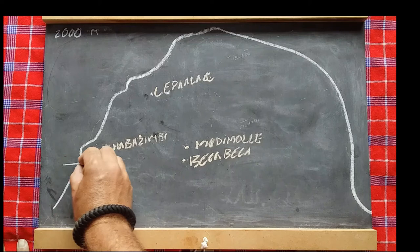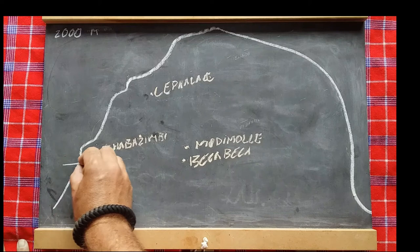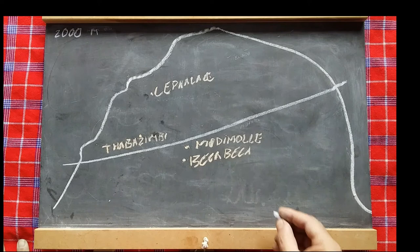Just north of Modimolle there's a fault line called the Munshin or Thabazimbi fault line.